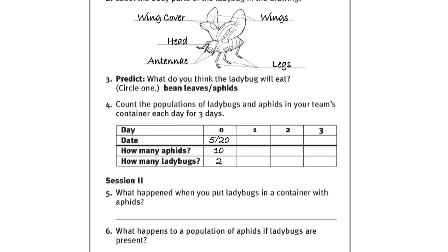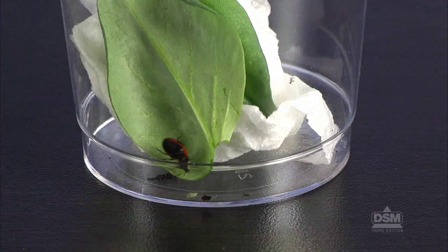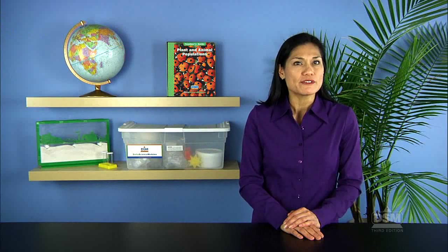Allow time for students to observe the behavior of the ladybugs in the container. Next, ask students to predict whether the ladybugs will eat the bean leaves or the aphids, and have them circle their choice on their activity sheets.